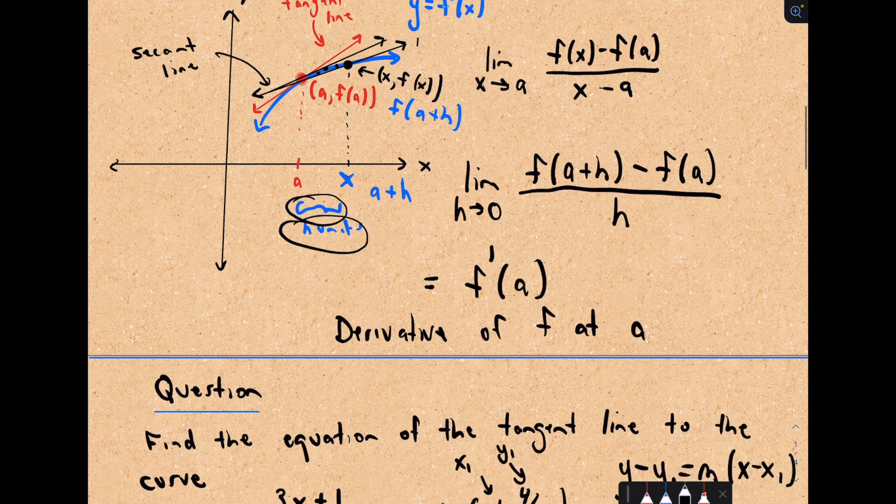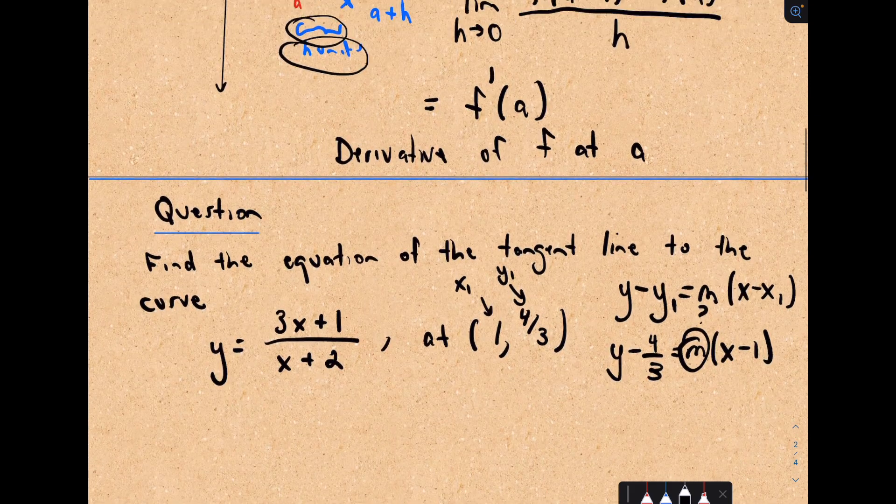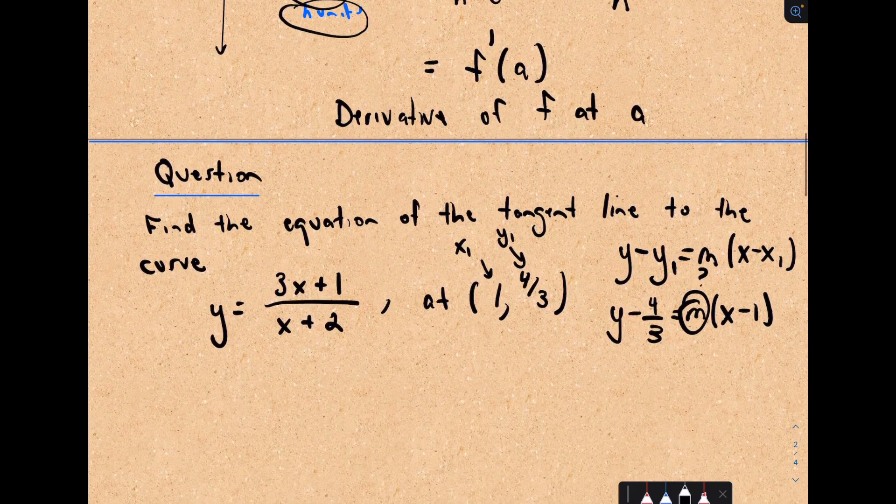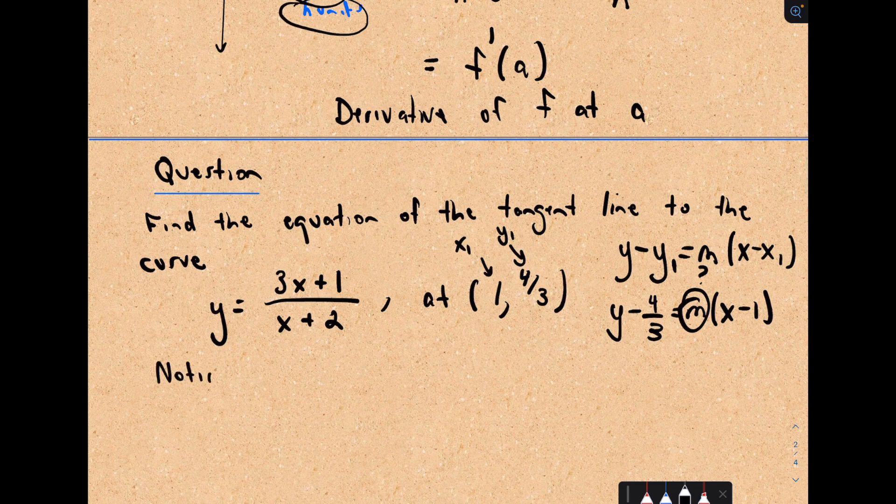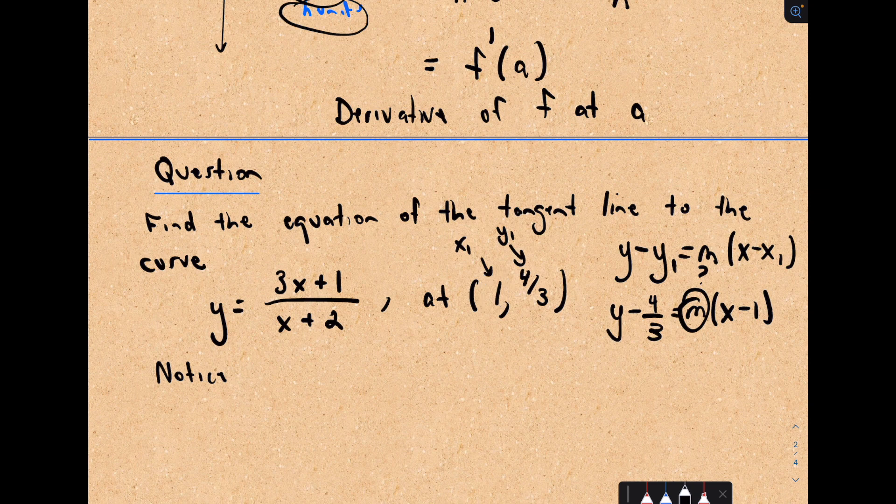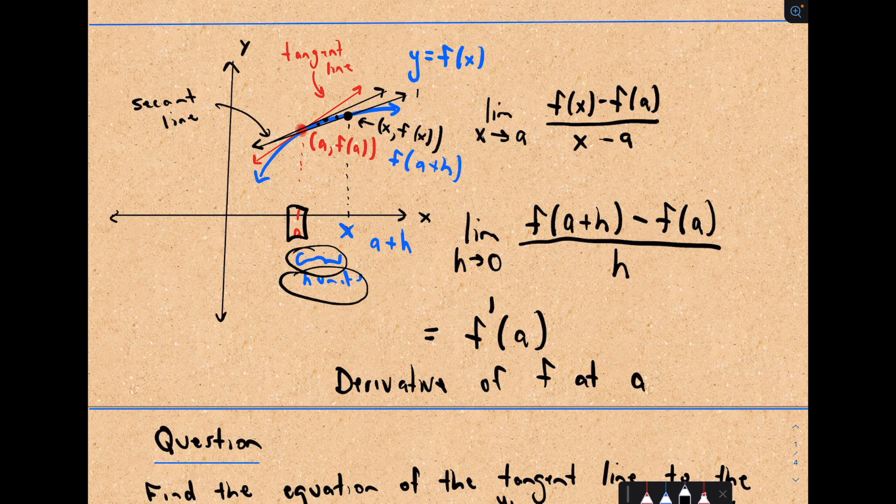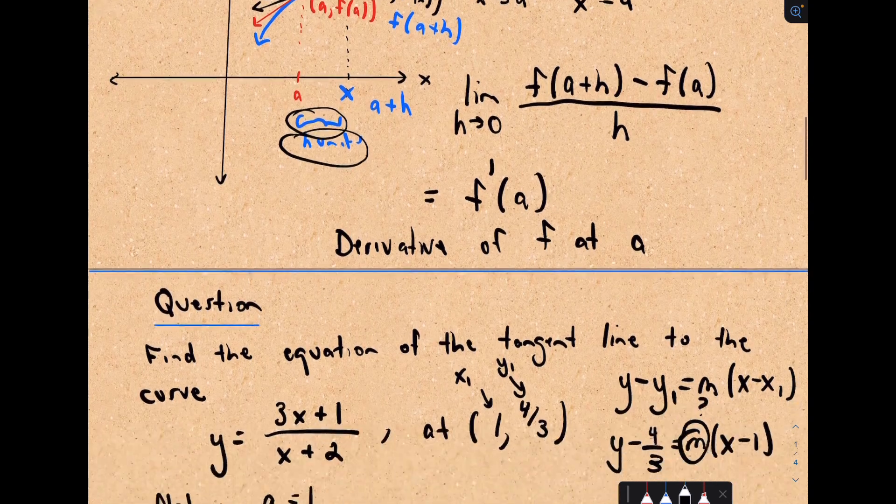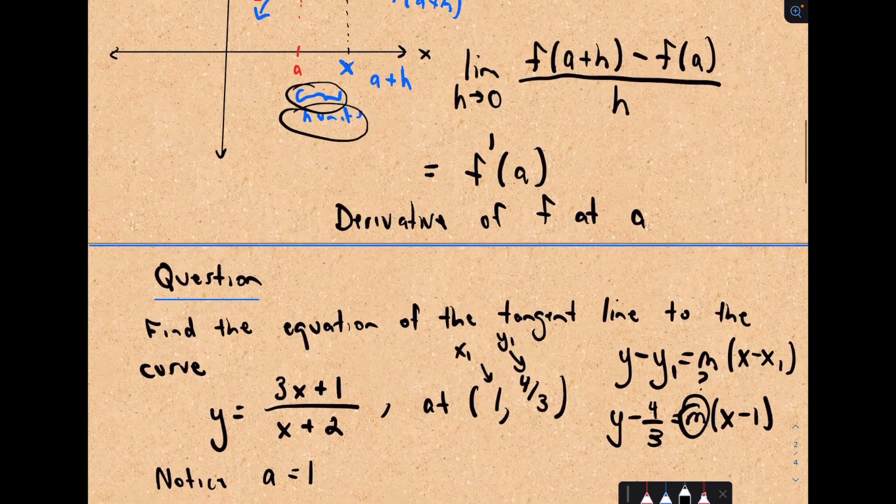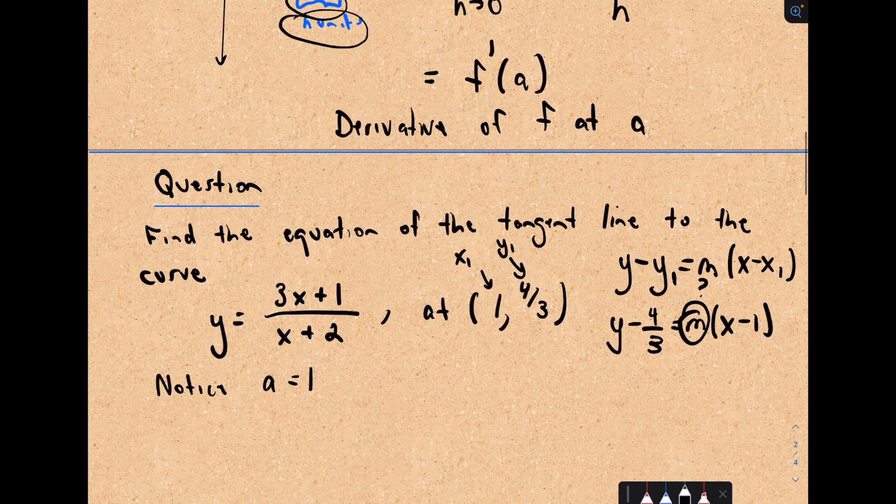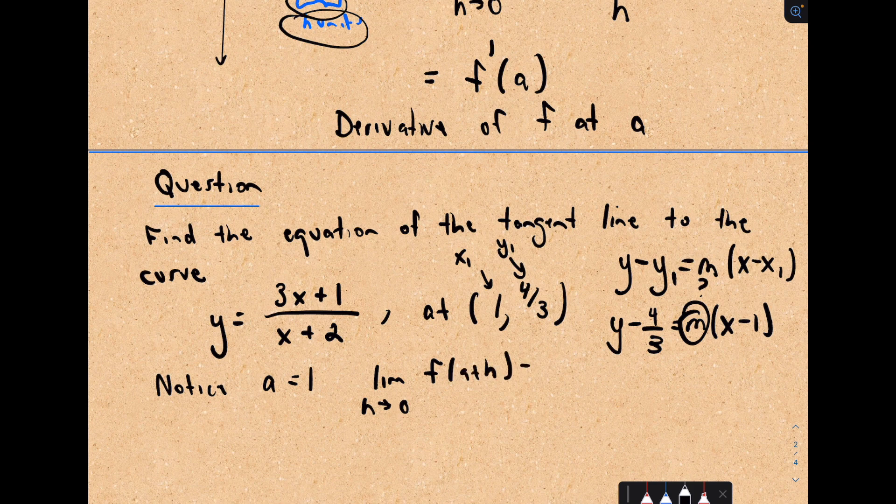To figure it out, we're going to use one of these two definitions. Sometimes it's easier to use one or the other. In this case, notice the x coordinate that we're interested in finding the slope of the tangent line, that's our a value. So our a value is equal to 1. We know that our a value is equal to 1. Which definition do you want to use? Let's use the second one.